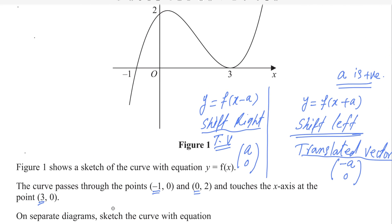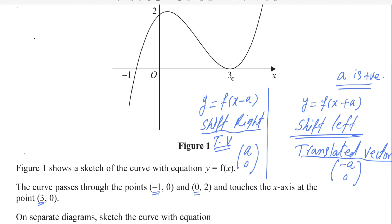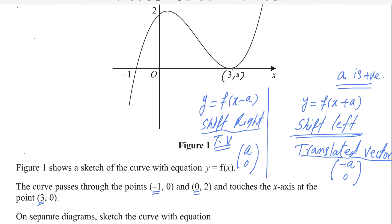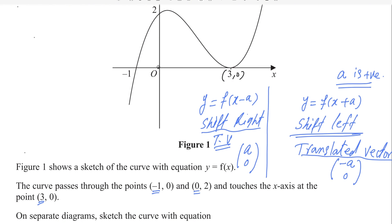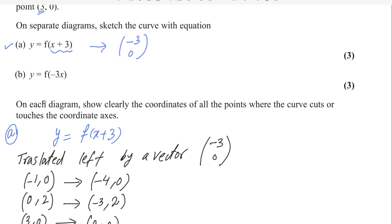These are the three points: (3, 0) moves to (0, 0), another point moves to the left, and the graph is sketched accordingly with the same shape but shifted left. Let me show you how to sketch this now.